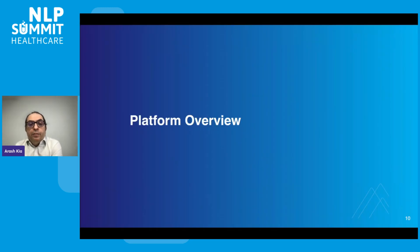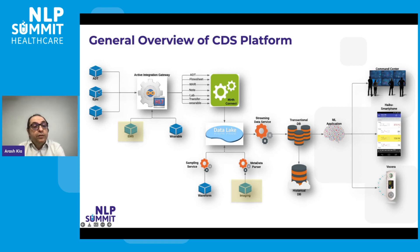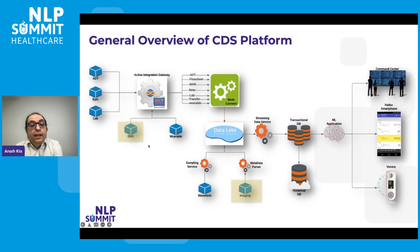Let's review our platform. This is a general overview of what we call the Clinical Data Science platform. As you can see, there are different platforms: the ADT platform, the electronic medical record Epic, different lab platforms, variable devices sending data to our gateway, imaging and PACS also sending real-time data. We are in the middle of integrating with EMS, which is still in our roadmap. We use the Active Integration Gateway, Cloverleaf, as a gateway, and a lightweight interface, MIRT Connect, to communicate with all platforms.